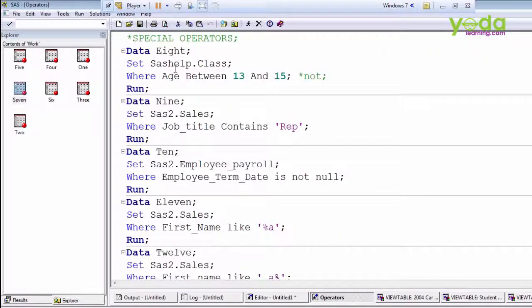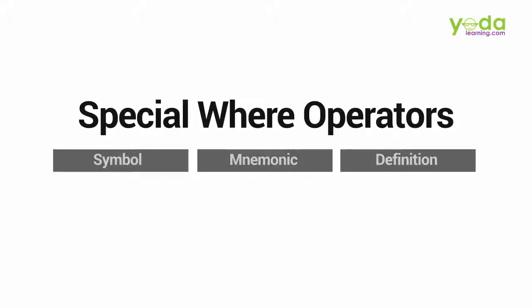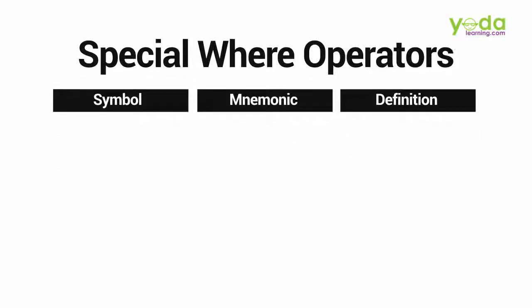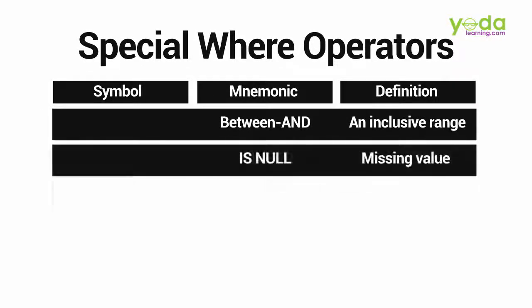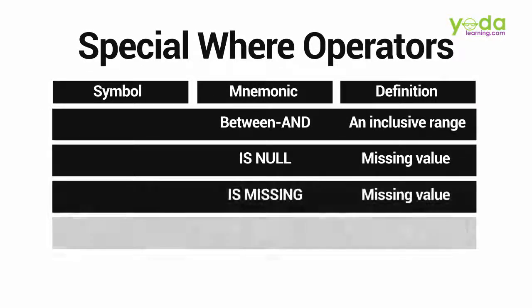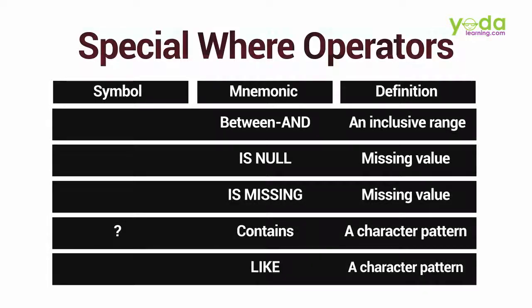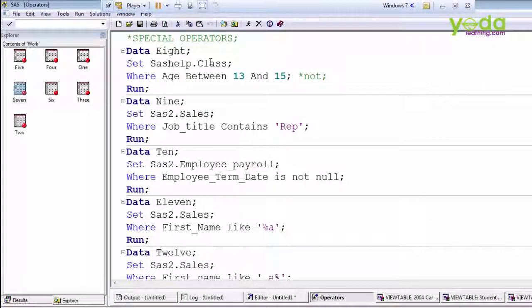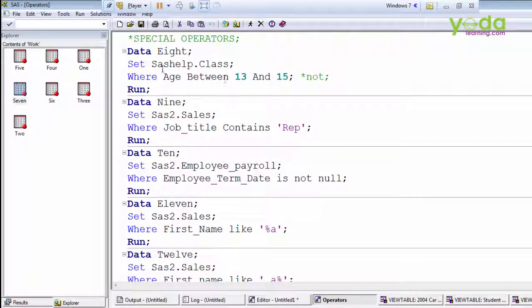Now we have special WHERE operators. These special WHERE operators include: BETWEEN AND, IS NULL, IS MISSING, CONTAINS, and LIKE. These special WHERE operators can only be used in a WHERE expression — you have to use them in a WHERE statement only. The first one is the BETWEEN AND operator. We are reading a class dataset here.